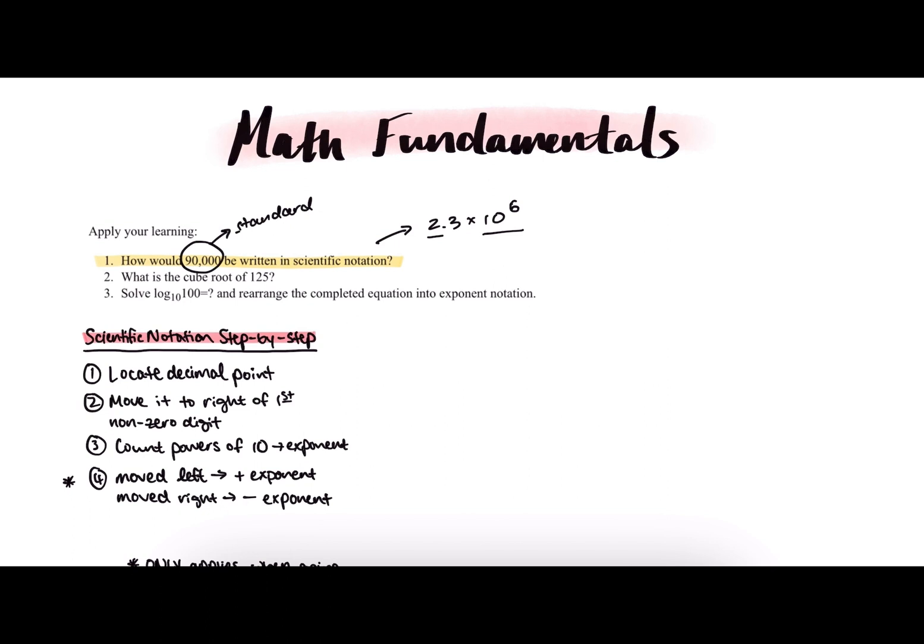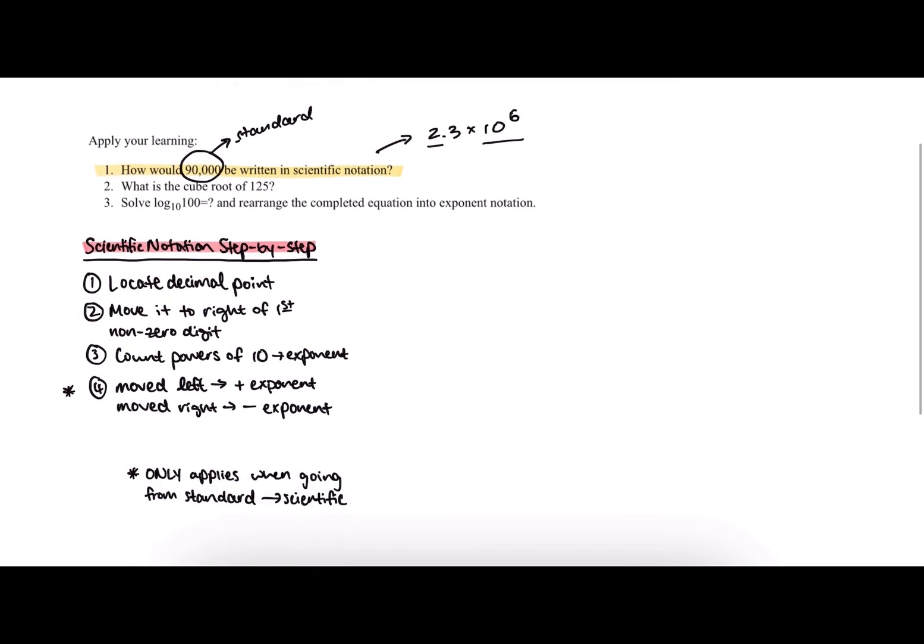Here below I've written a step-by-step guide on how to take a number from standard notation to scientific notation. Let's try converting 90,000 into scientific notation. I'll write it here so we can see it a little bit clearer. Let's start with step one.